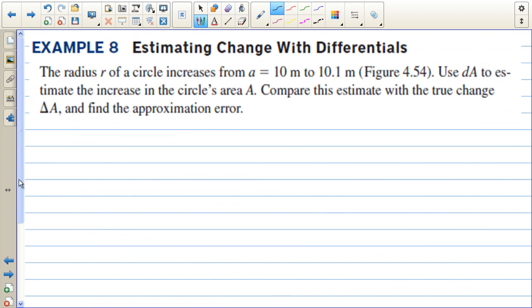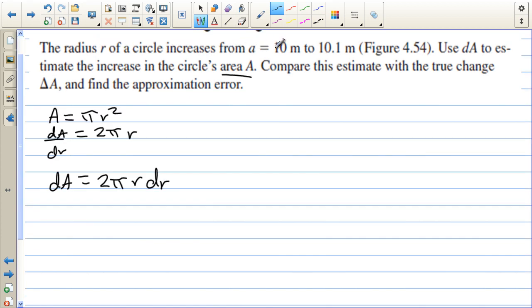In example 8, we're estimating the change with differentials. The radius r of a circle increases from a equals 10 to 10.1. Use dA to estimate the increase in the circle's area and compare this estimate with the true change in A and find the approximation error. Well, the area of a circle is πr². And the derivative of A with respect to r is 2πr. And then if you multiply by dr, you get dA equals 2πr dr. The change in r of a circle increases from 10 to 10.1. So dr, just by doing a little subtraction, we take 10.1 minus 10. The change in r ends up being 0.1.